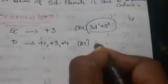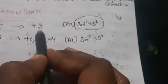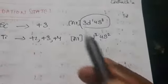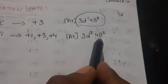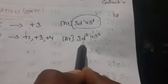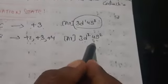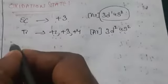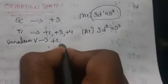For titanium, the configuration is 3d2 4s2. One electron goes to s-orbital, another to d-orbital. Considering 2s orbitals gives plus 2; taking 2s and 1d gives plus 3; taking 2s and 2d gives plus 4. For vanadium it is having plus 2, plus 3, plus 4, plus 5.